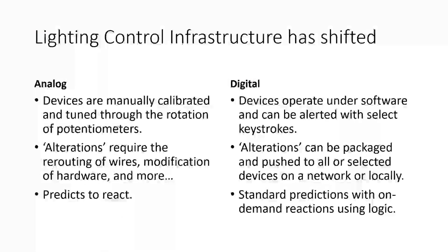Lighting control infrastructure has shifted from analog to digital. Analog devices are manually calibrated through the rotation of potentiometers — alterations require rerouting wires or modifying hardware, and they rely on predictions that are difficult to update. The digital version operates on software that can be altered with select keystrokes — alterations can be packaged and pushed to all or selected devices on the network. It uses standard predictions with on-demand reaction using logic that can be updated in real time, giving much more flexibility in how you design the lighting space to meet the demands of your occupants.